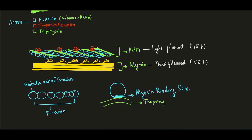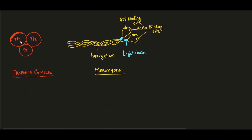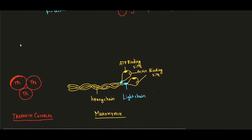During normal resting conditions, the myosin binding site on actin is masked by tropomyosin, preventing muscle contraction. When the muscle contracts, tropomyosin moves away from the myosin binding site. The troponin complex is also involved in this regulation.